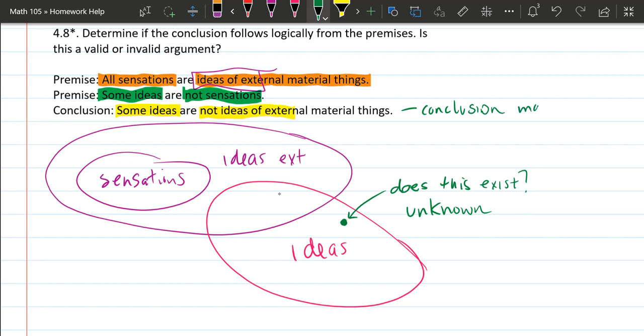Conclusion may or may not be true. And when this happens, that's an invalid argument because the conclusion does not automatically follow.